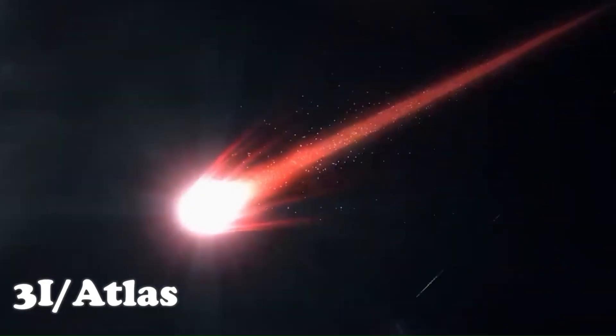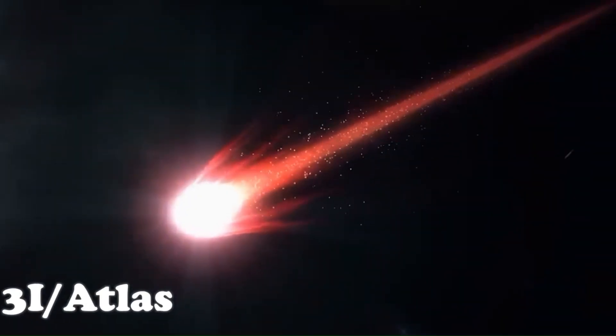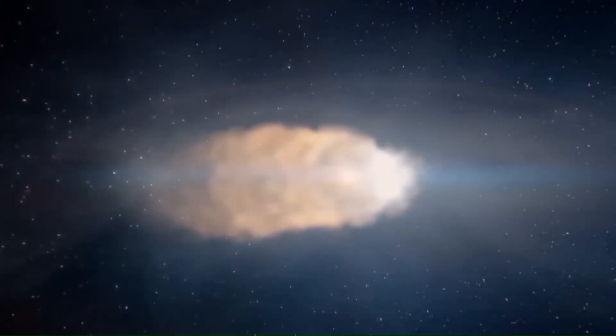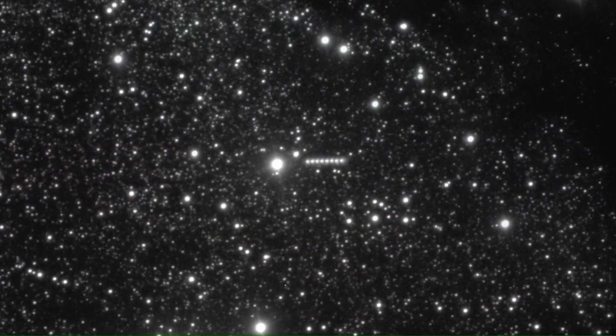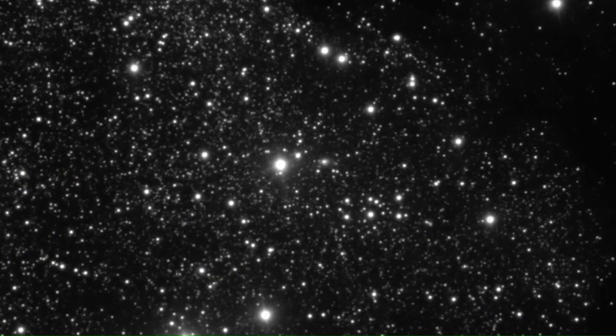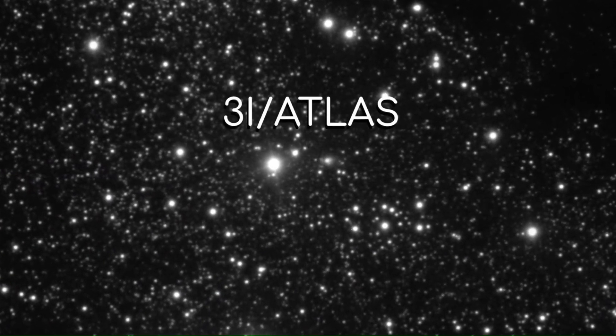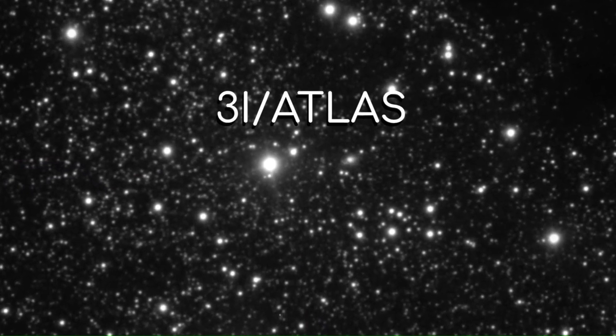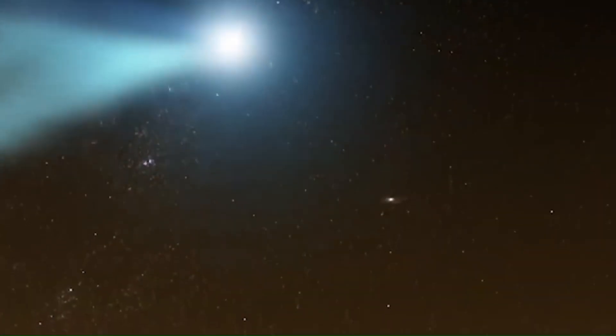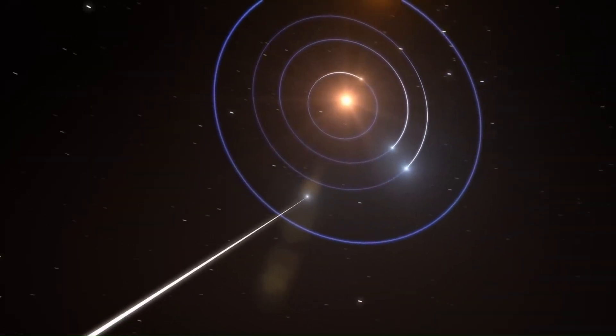In short, 3I Atlas is big, bright, and strange. It shows dust activity without the expected gases, has a halo in front instead of a tail behind, and defies the patterns we know from both solar system comets and past interstellar visitors. The clock is ticking for astronomers to figure out what it really is before it disappears into the dark of interstellar space for good.